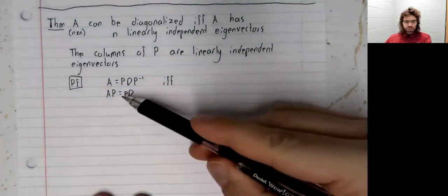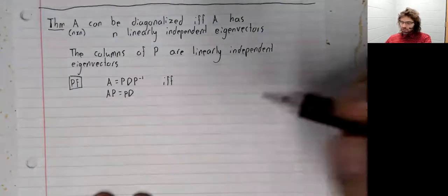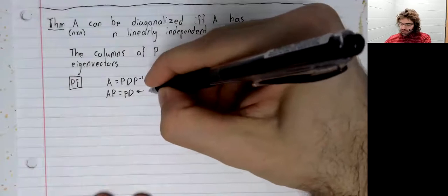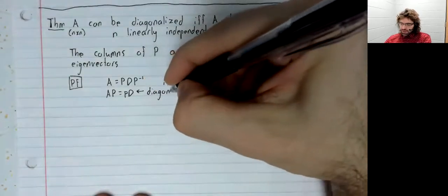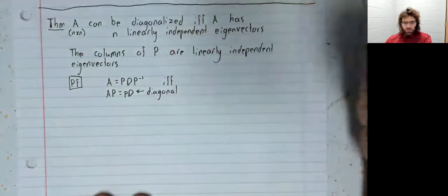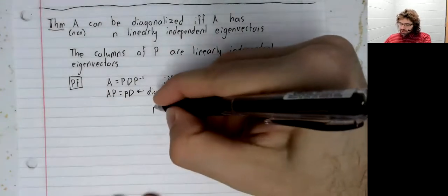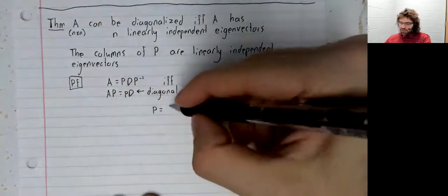And let's look at this equality. A P equals P D, where D is a diagonal matrix.